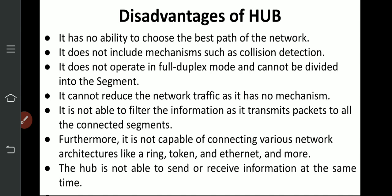Disadvantages of hub: it has no ability to choose the best path in the network — it cannot find the shortest path to the destination. It does not include mechanisms such as collision detection. It has no software to detect when collision occurs in the network. It does not operate in full duplex mode and cannot be divided into segments. Hub works in half duplex mode only.